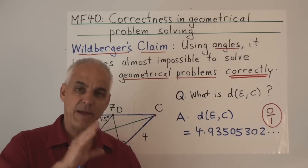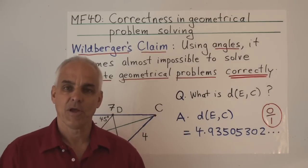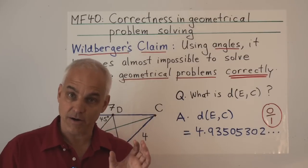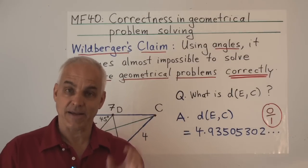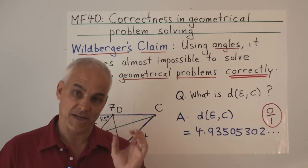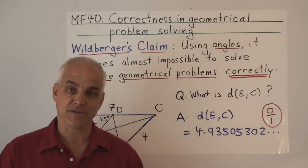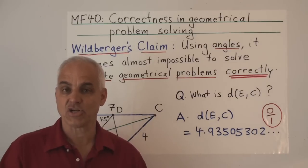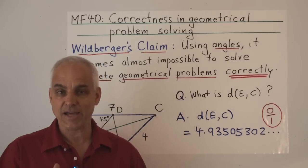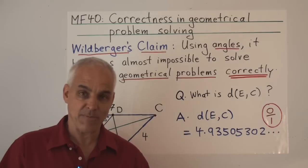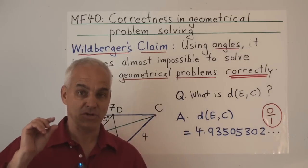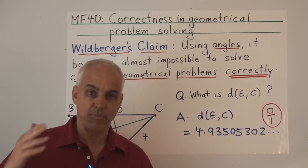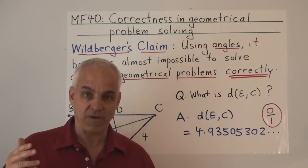When it comes to arithmetical problems, we mostly all acknowledge that there are correct answers and that it's important to get those correct answers. We don't allow any kind of approximation in general. So if I ask you what six times seven is, I expect to hear 42, not 40 or approximately 45.